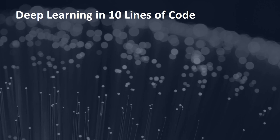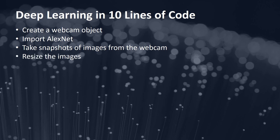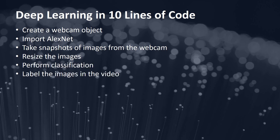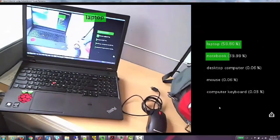In MATLAB, we're going to show an example of how you can do deep learning in just 10 lines of MATLAB code. What we're going to do here is create a webcam object to read in images, import AlexNet as a pre-trained network, take snapshots of images using the webcam, resize those images so that we can feed them into AlexNet, perform the classification, and then label the images in the video. Here we're using a while loop to read in images and classify them as our image changes. Modifying this a little bit, we have a classifier where we are finding the prediction accuracy or percentage for each image and labeling the different objects in our video as we go along.